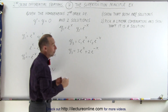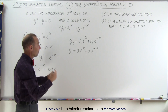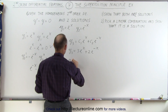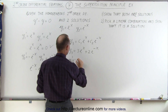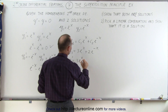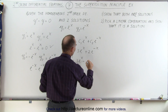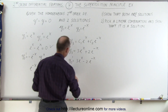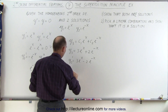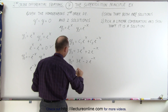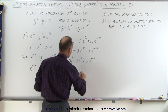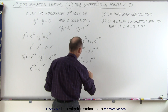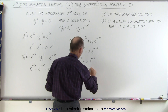Of course, if the superposition principle holds, that must be a solution. So we take y3 prime equal to 3e to the x minus 2e to the minus x. Taking the derivative again, y3 double prime is equal to 3e to the x, and the minus cancels the minus, giving us plus 2e to the minus x.